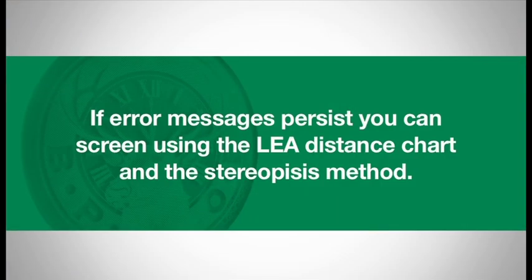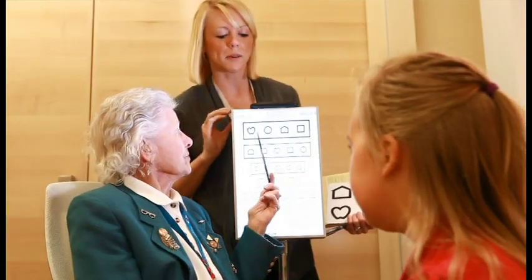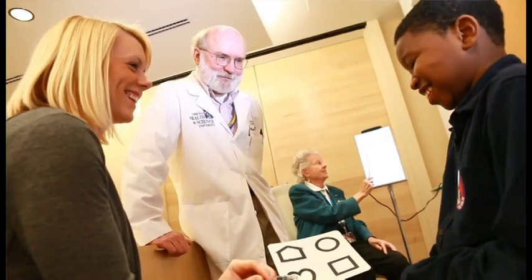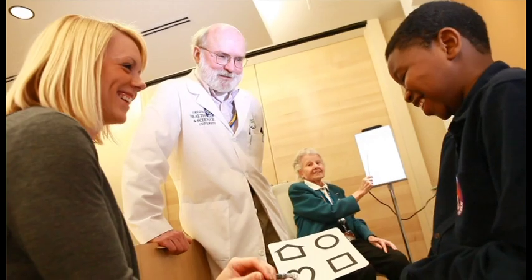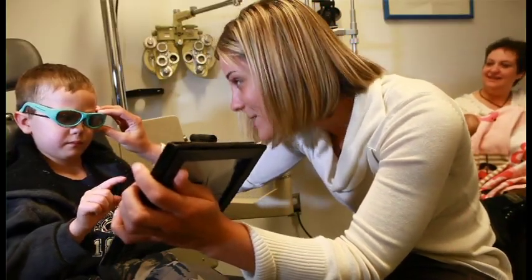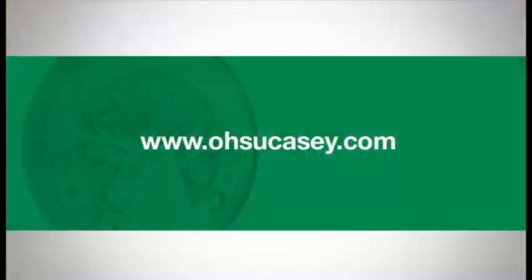If any of the above error messages continue to appear and the device cannot perform a measurement, you can screen using the Lea distance chart and the stereopsis method. Please see our instruction video on how to perform a distance screen and stereo test, located on the Elks Children's Eye Clinic Vision Screening website.